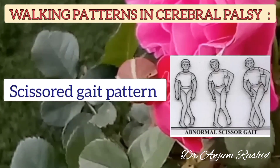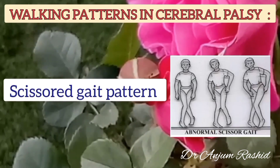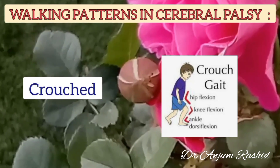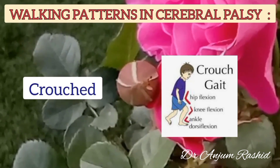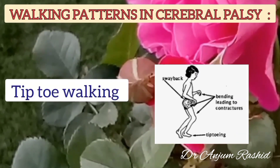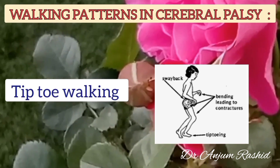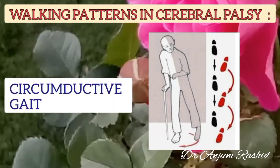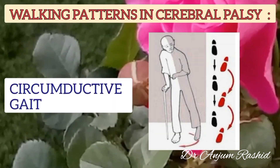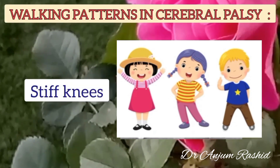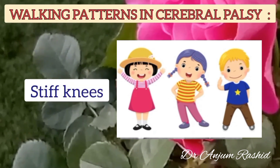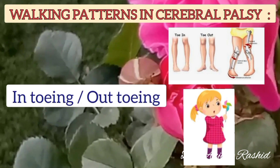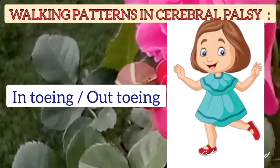Usual walking patterns in cerebral palsy include scissored gait, crouched posture, tiptoe walking, circumductive gait in hemiplegic cerebral palsy, walking with stiff knees, and in-toeing or out-toeing walking patterns.